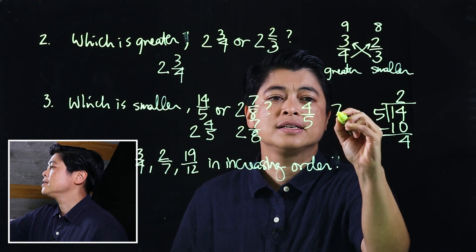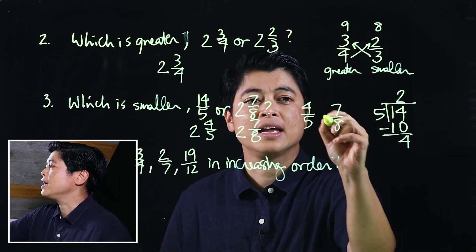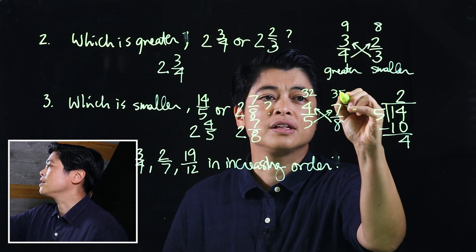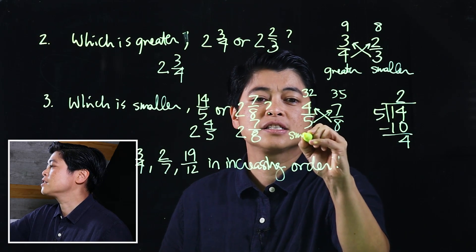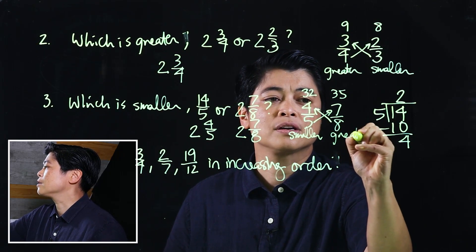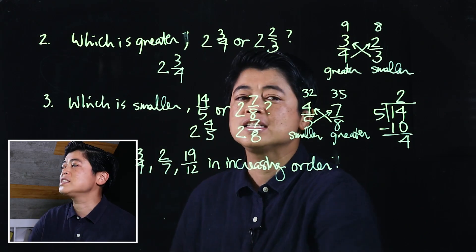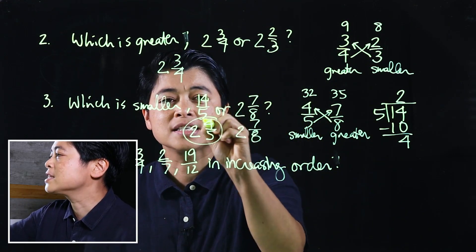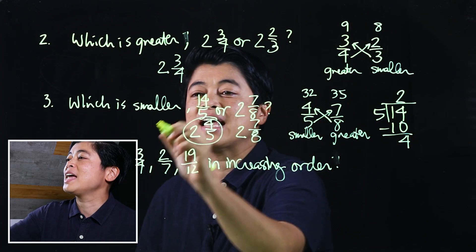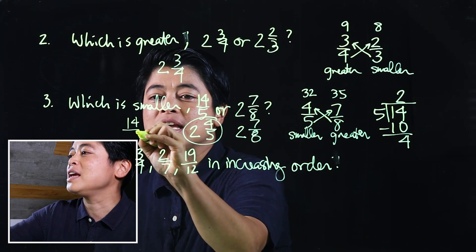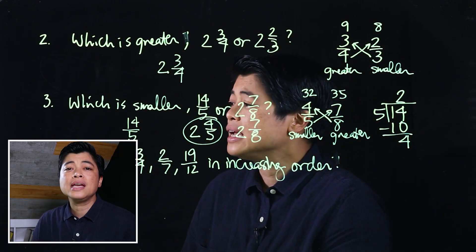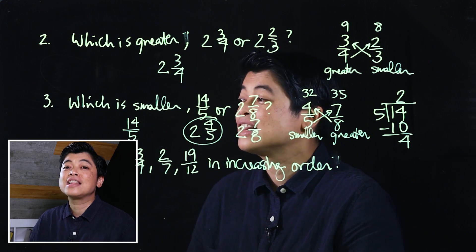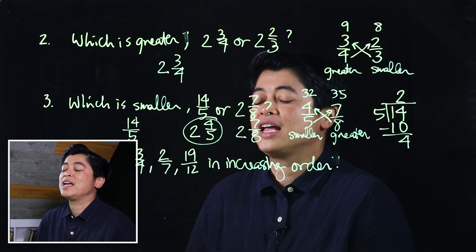We multiply across: that's 32 and 35. So four-fifths is smaller and seven-eighths is greater. Since the question asks which is smaller, the answer is four-fifths — but we write it as the original number given, which is 14 over five, not the converted form. Always use the original numbers when answering.